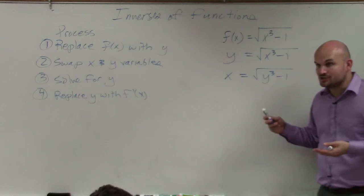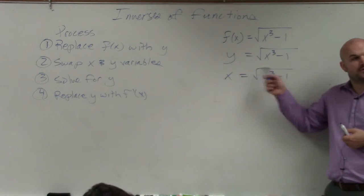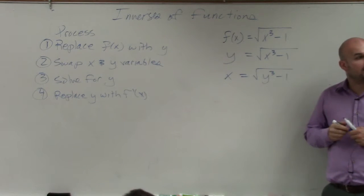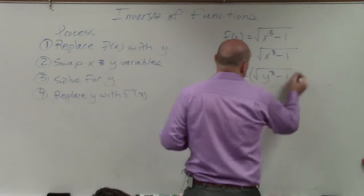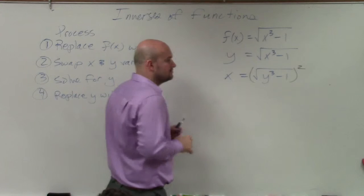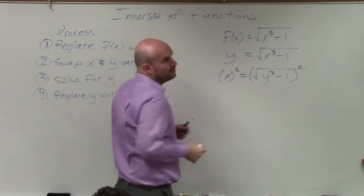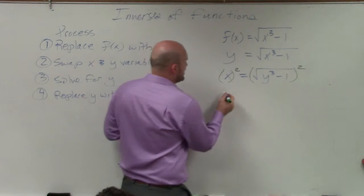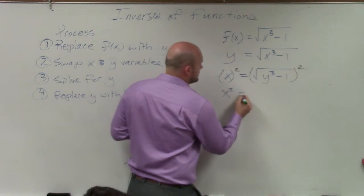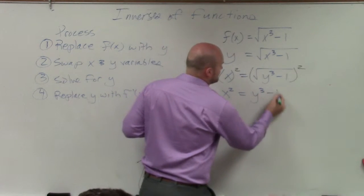So the first thing we need to undo is this square root. How do you undo the square root? You square. Whenever you do on one side, you have to do on the other side though. Don't forget that. So now you have x squared equals y cubed minus 1.